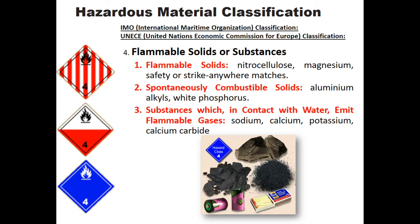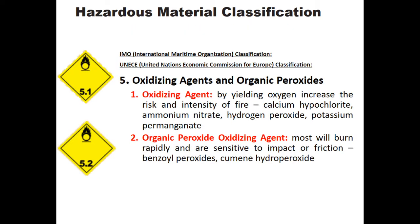Flammable solids include combustible dusts and powders such as aluminum alkyls, white phosphorus, magnesium, calcium, and potassium carbide — these cause explosions that are very detrimental. Oxidizing agents that react with or yield oxygen include calcium hypochlorite, ammonium nitrate, and hydrogen peroxide. These chemical agents have a strong affinity for oxygen — either they attach to it or remove it according to the oxidizing reaction.